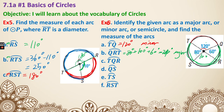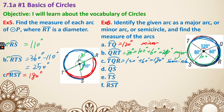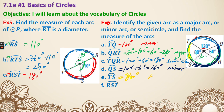Next, arc TQR - that portion uses central angles of 120 plus 60, which equals 180 degrees, making it a semicircle. Then arc TR - with only two letters, this is a minor arc measuring 160 degrees. Next, arc TS - that's just 80 degrees, which is a minor arc.